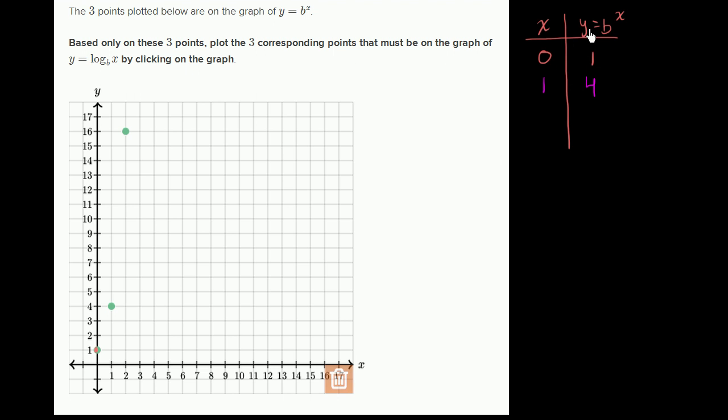So another way of thinking of this: 4 equals b to the first power, and we can deduce that b must be 4. That's this point right there. This point tells us that b to the second power equals 16. So when x equals 2, y equals 16.